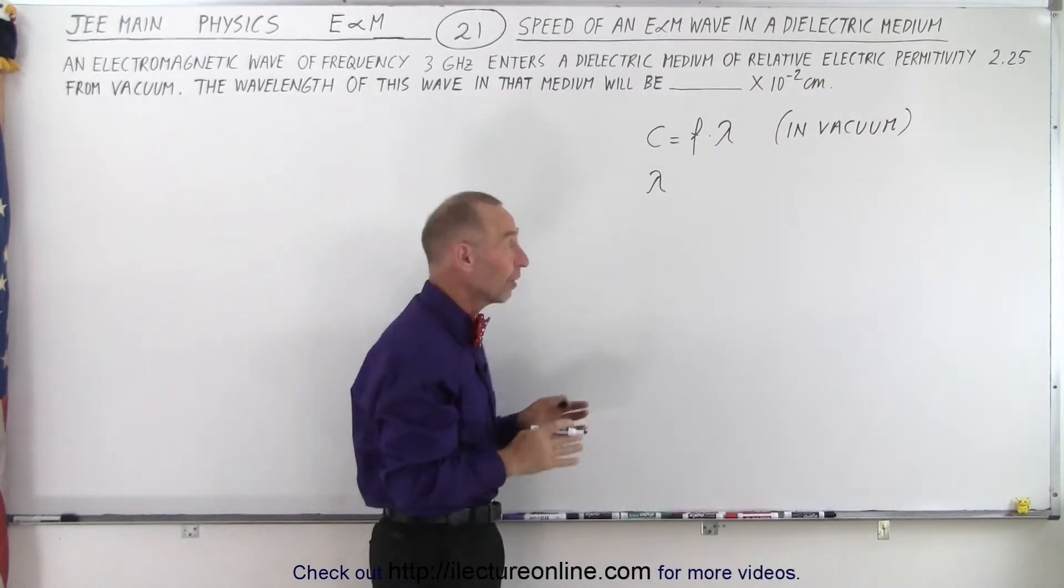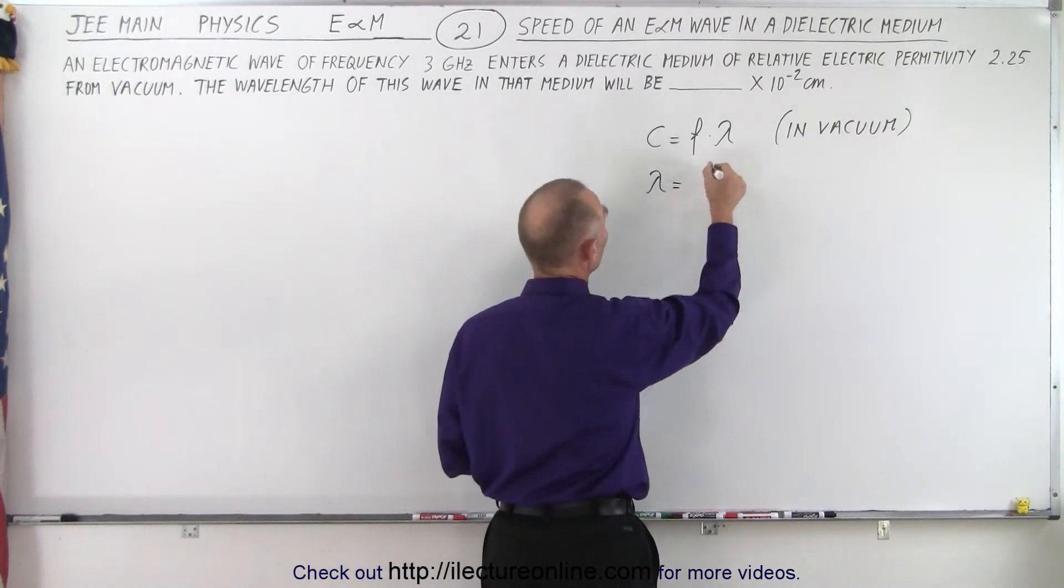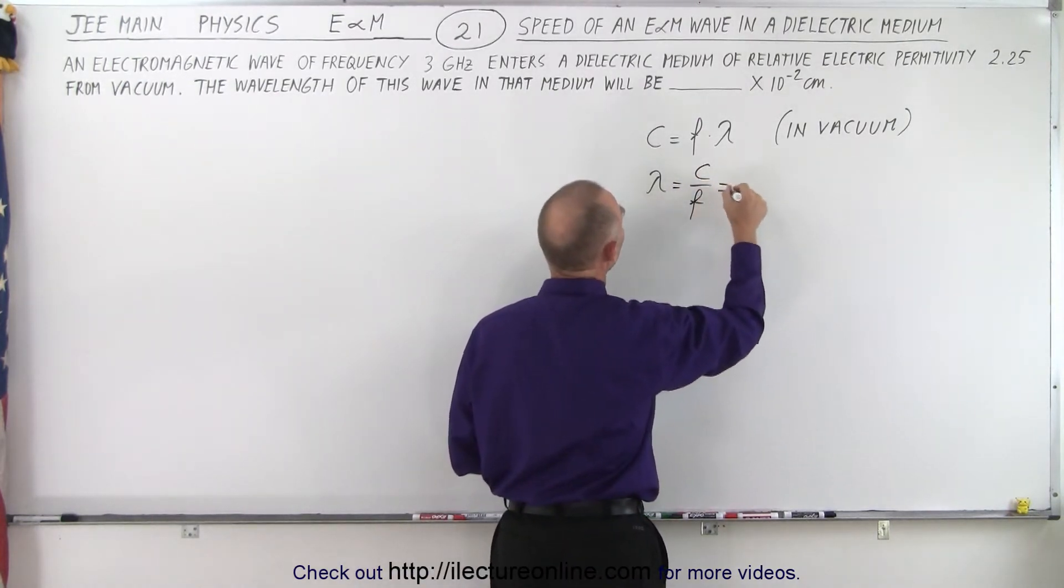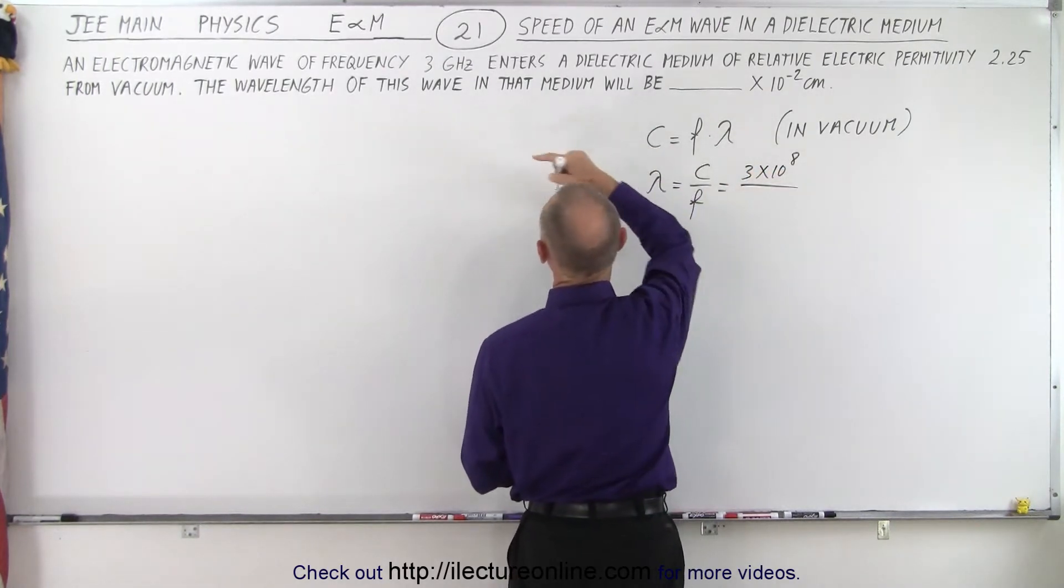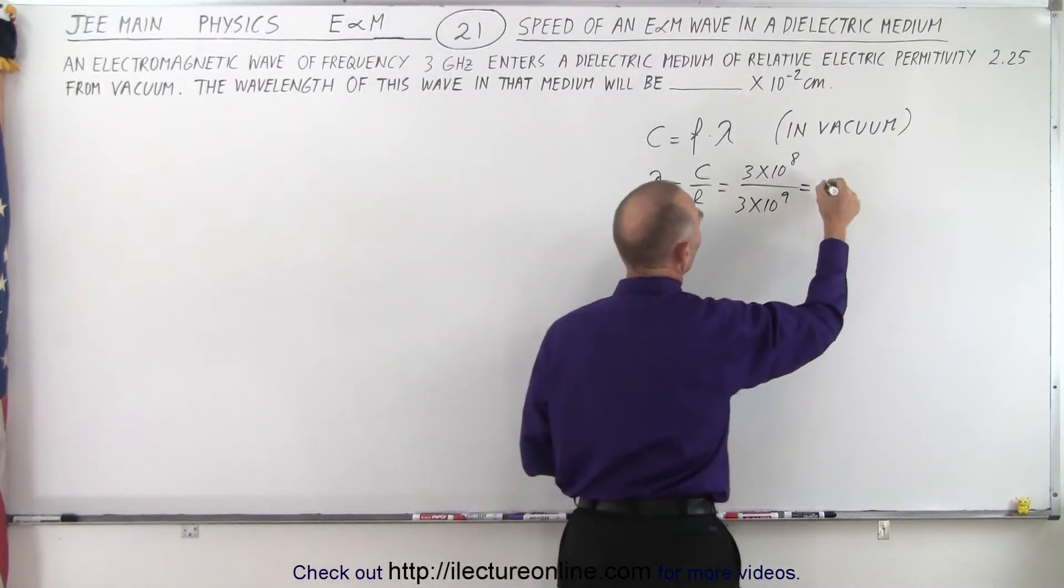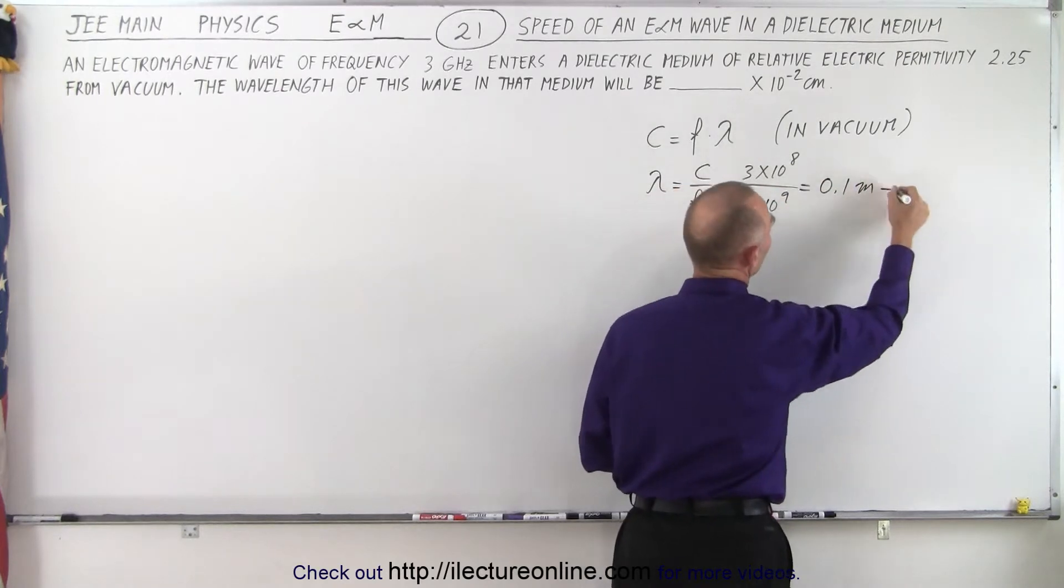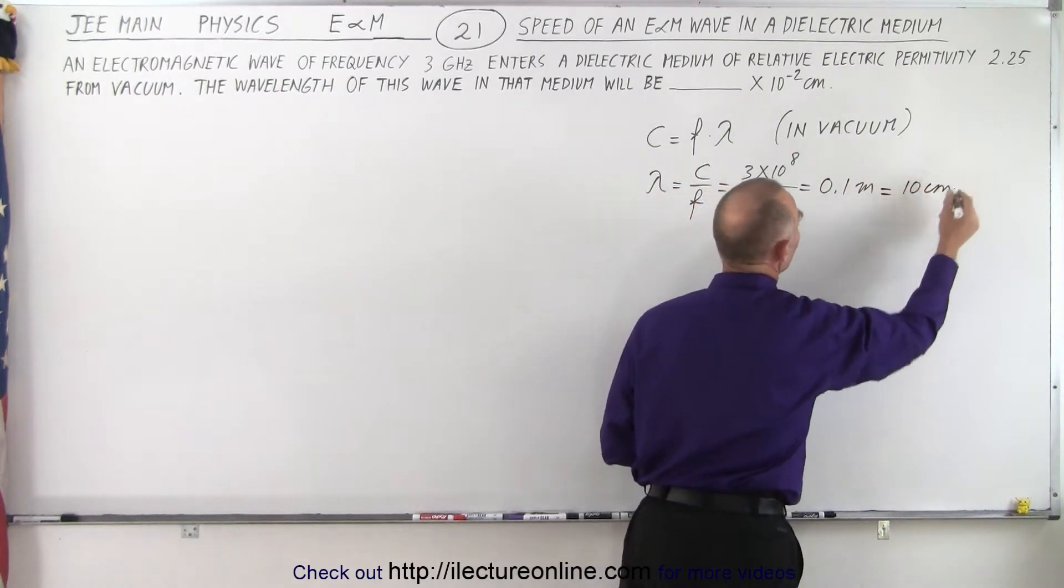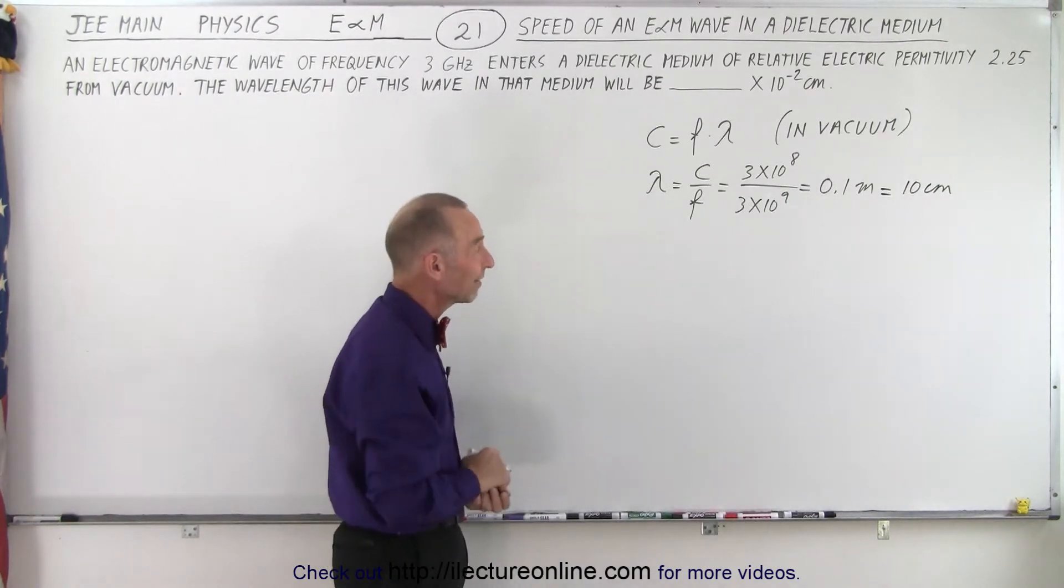This is actually what we would do to solve the problem but it's nice to know this. So the wavelength would be equal to the speed of light divided by the frequency. So in this case it would be 3 times 10 to the 8 divided by the frequency of 3 gigahertz which is 3 times 10 to the 9th which is equal to 0.1 in meters, which is equal to 10 centimeters. So in a vacuum this wave would have a wavelength of 10 centimeters.